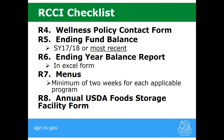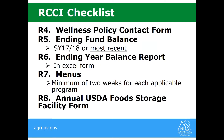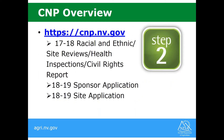For the RCCI checklist, the fourth item is the wellness policy contact form. You also send in an ending fund balance from the current school year or most recent, and we are looking for the ending year balance report — that's the Excel form posted in CNP. We will need to see your menus, again a minimum of two weeks for each applicable program: breakfast, lunch, and snack. And the annual USDA food storage facility form.